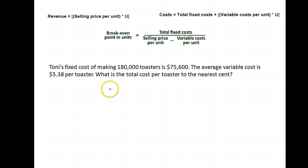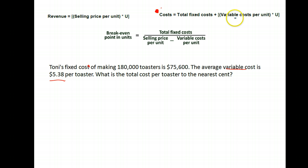Here's another question. Tony's fixed costs of making 180,000 toasters is seventy-five thousand six hundred dollars. The average variable cost is five dollars and thirty-eight cents a toaster. What is the total cost per toaster? This time we're asking about costs. The total cost is going to be the fixed plus the variable cost. The variable cost per toaster is five dollars and thirty-eight cents.